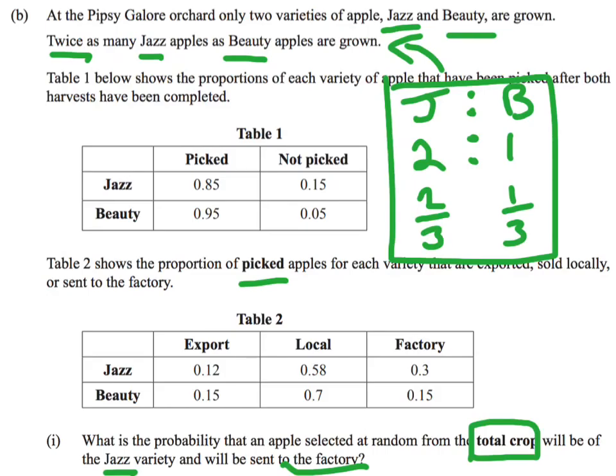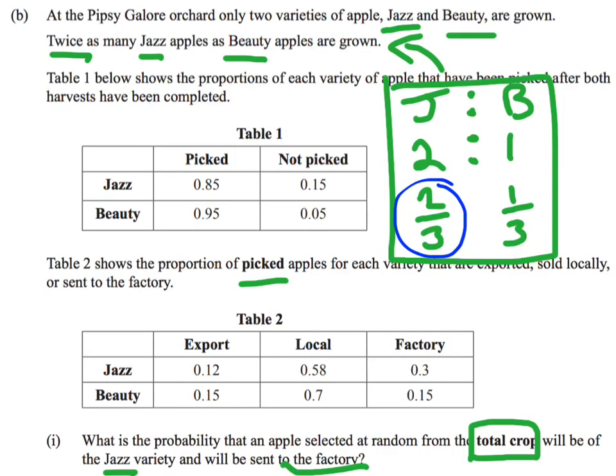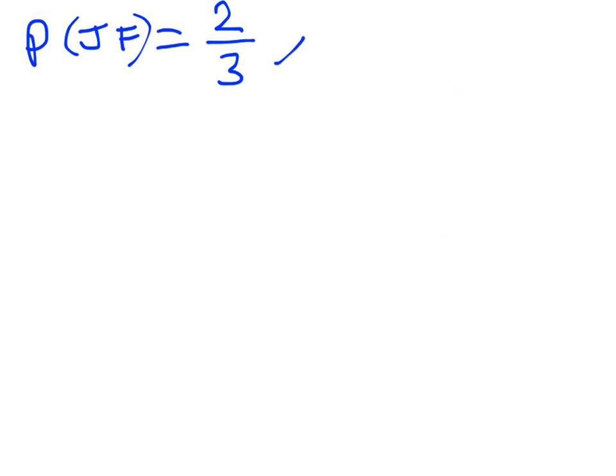If I go back to the table, I'm going to start with the trees themselves. We know that two thirds of all the apples are jazz apples. Then from the two thirds of all the apples off those trees, 85% of those are jazz apples that get picked. So I'm going to say times by 0.85.